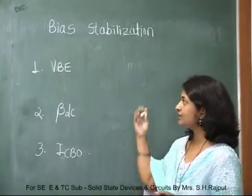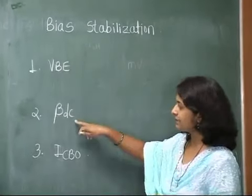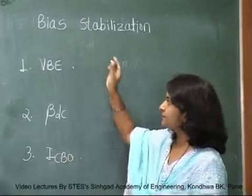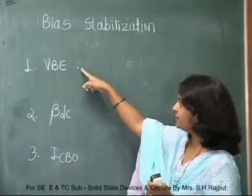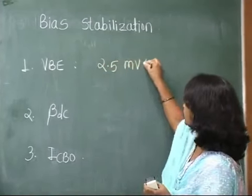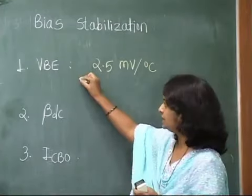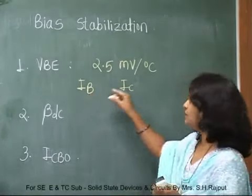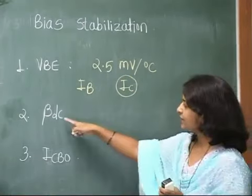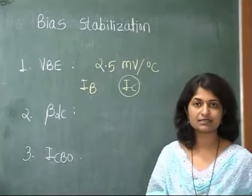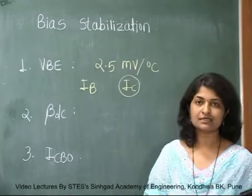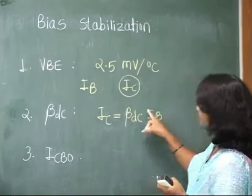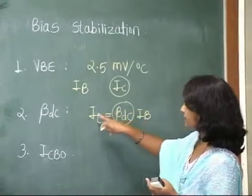If there is a change in temperature, VBE decreases at the rate of 2.5 millivolts per degree centigrade. Because of the change in VBE, IB — the base current — changes, and then IC changes because IC is dependent on IB. So temperature directly affects IC. Regarding beta DC: it is the current gain of the transistor, which is different for different devices. Beta DC has the relation IC equal to beta DC into IB, so if there is a change in beta DC, that affects IC.